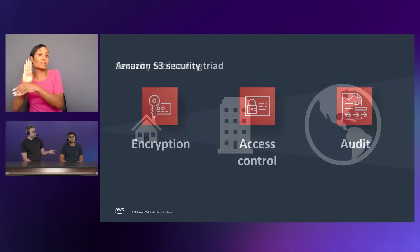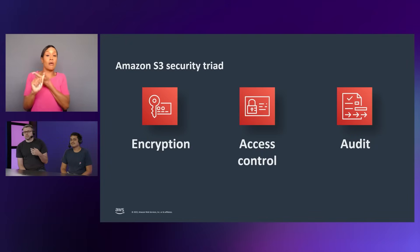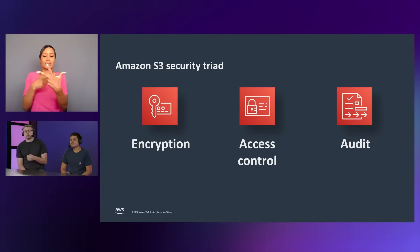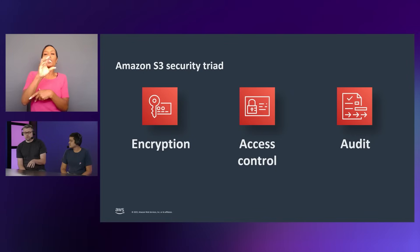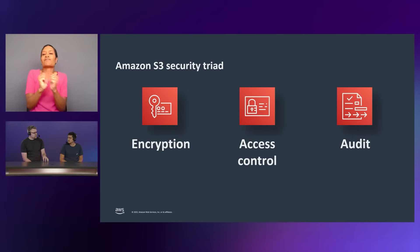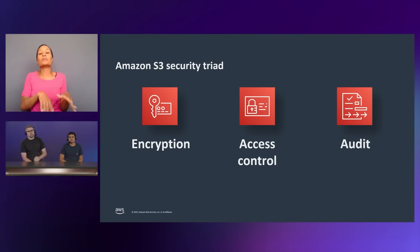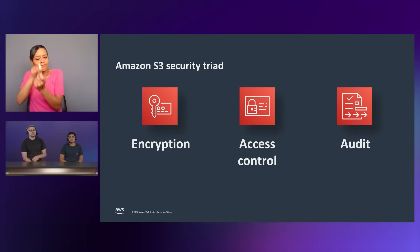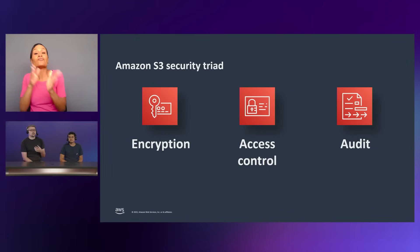We're going to be breaking this talk down into three different sections. We're going to talk about encryption — how we keep prying eyes out of data as it is stored — access control, to make sure that only the right people have access to your data, and then audit, which allows you to verify that everything is set up correctly.